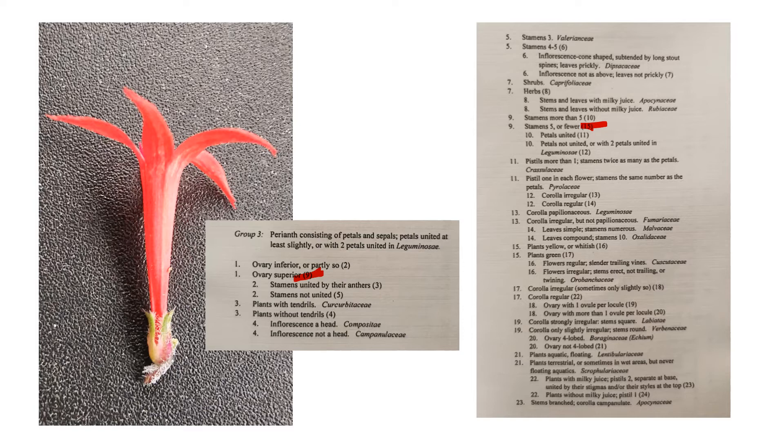We're in group three and you'll be able to see even better later, but this ovary is superior. So we're going to immediately go to nine and we're asking if there are more than five stamens or if there are five or fewer. And there are in fact five or fewer. And we'll look inside this flower a little bit more later. And so we're moving to 15. The plants are not yellow or whitish. They are green. So we're moving to 17 and the corolla is not irregular. It's regular. And so we moved to 22 and we ask if the plants have milky juice or they are without milky juice and monoeciously or dioeciously pistillate. And this is that. So we're moving on to 24.